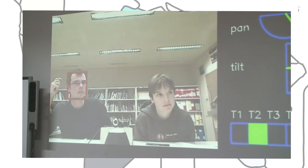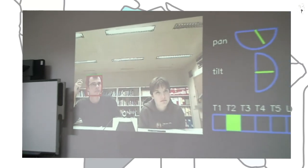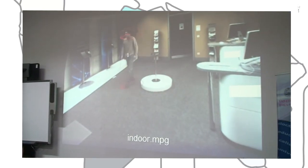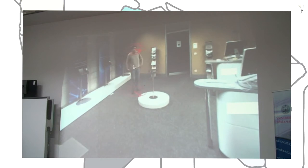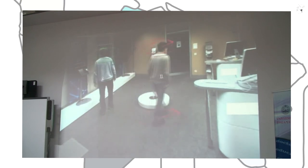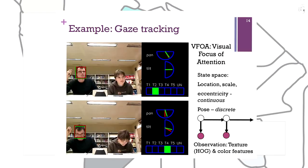Here is another example showing the orientation of a person — where they are moving and where their head is pointing. Both the body orientation and the head orientation are shown. This illustrates behavior tracking.